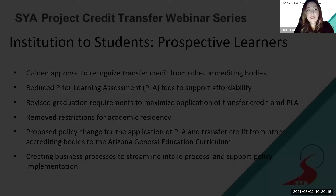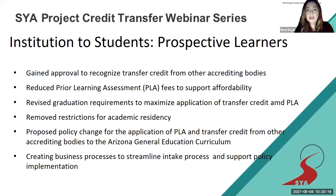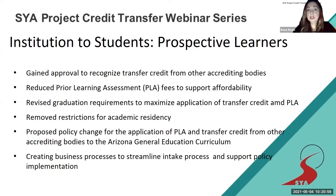Additional strategies for prospective learners include changing policies to maximize transfer credit and prior learning assessment credit, advising students in alignment with their university major requirements for a seamless journey, and reviewing business processes to ensure efficient, effective, and timely responses — which is critical since students must make decisions about course selection and transfer destinations.